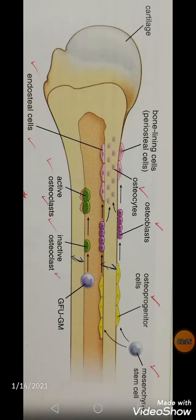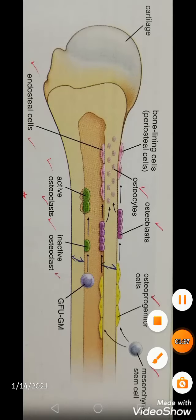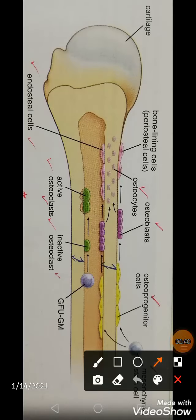Now looking at another diagram showing a longitudinal section of bone: on its very outer side it has the periosteum, and on its inner side it shows the endosteum layer. Many cells are present there, including osteoprogenitor cells along the periosteum and osteoblasts.